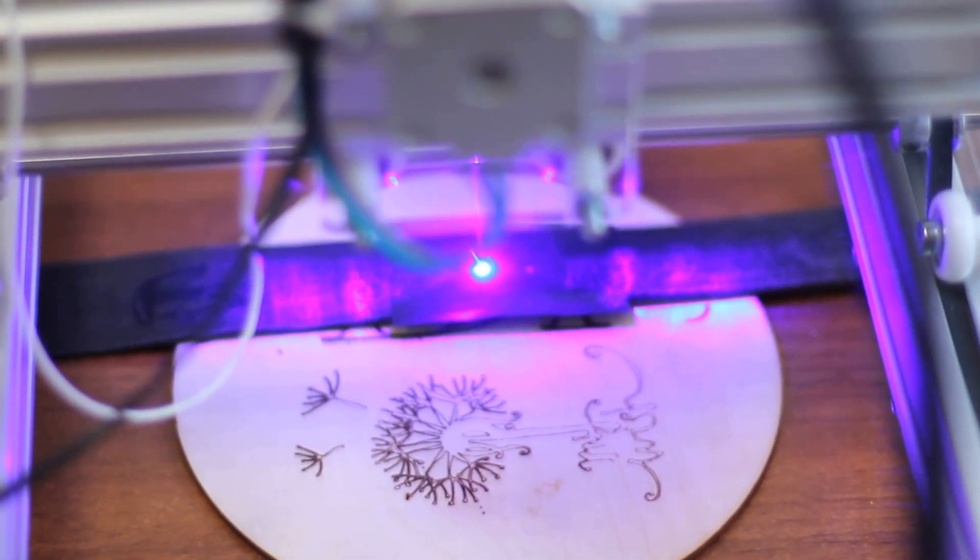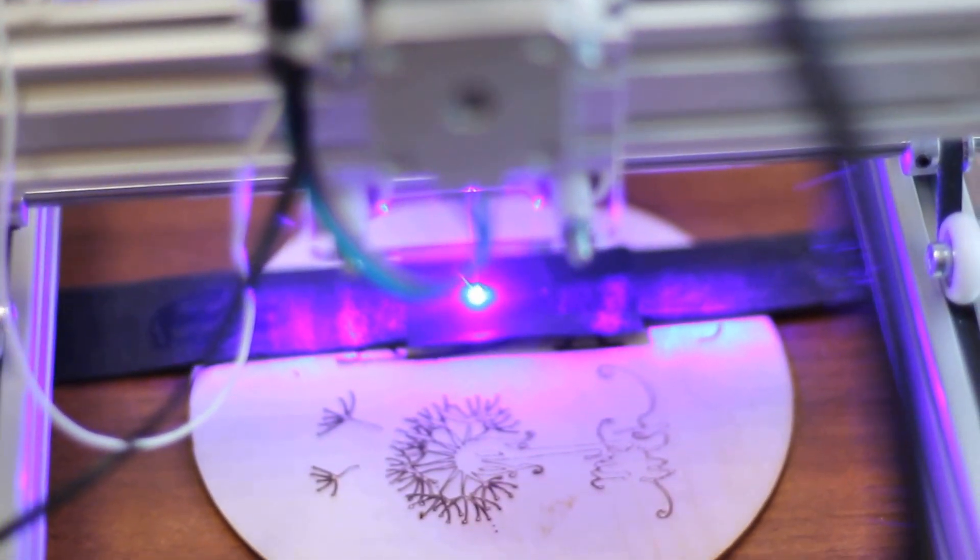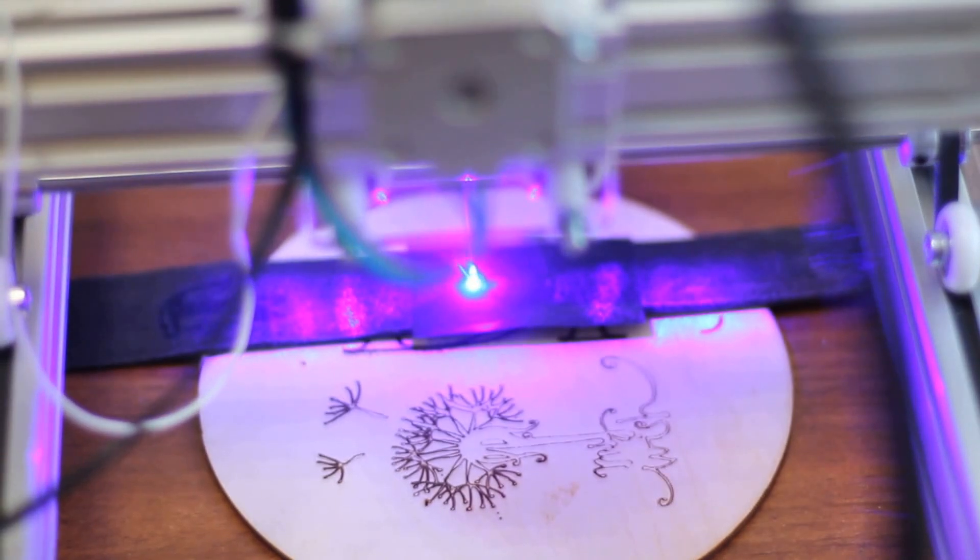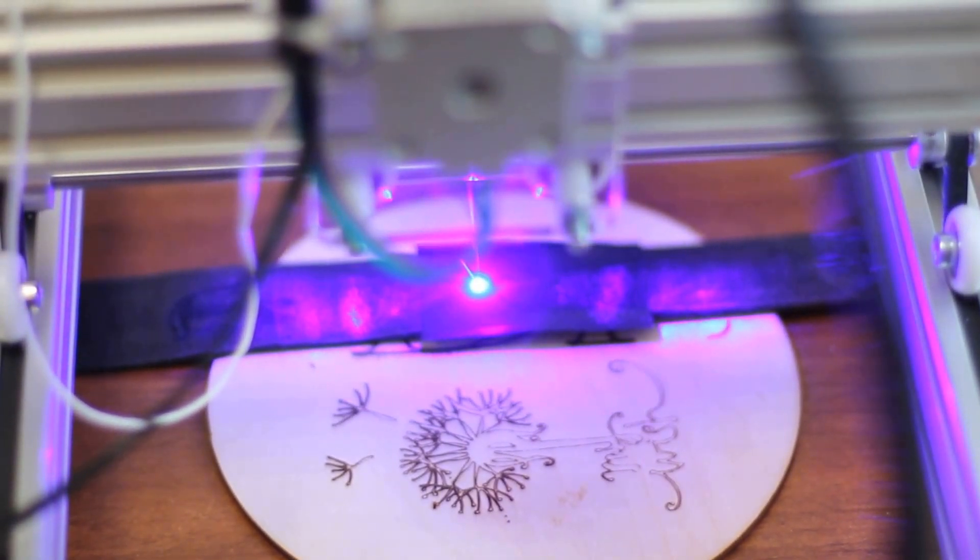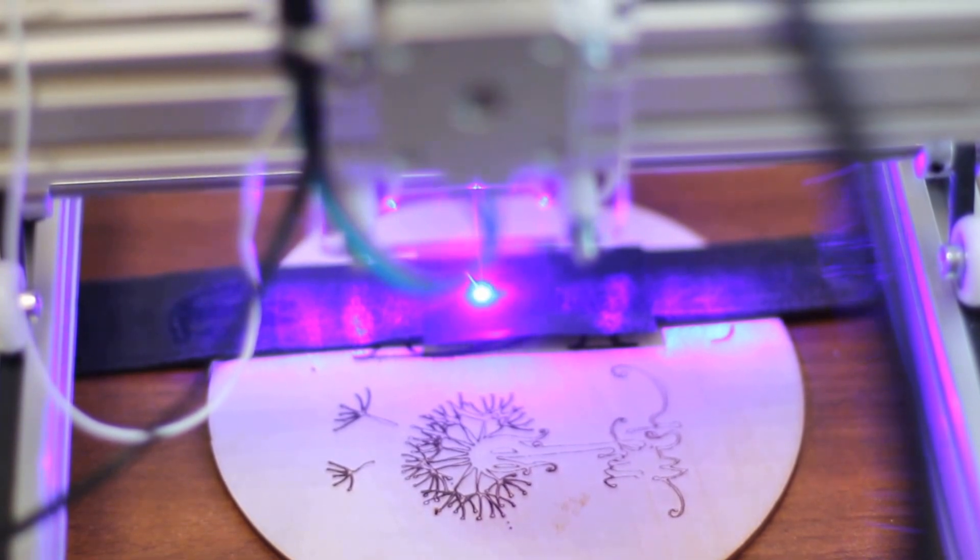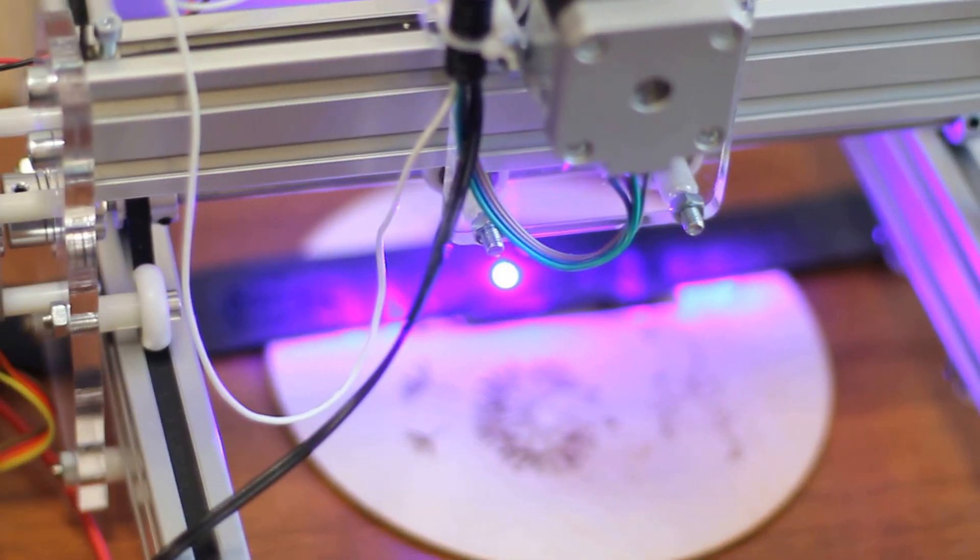As you can see, we use a different lens here—a standard lens with a focal range of about 10 centimeters. It's a little bit different than what we use for laser cutting. For laser engraving, you don't need that great power.